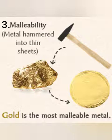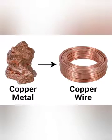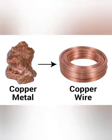Next point is ductility. Metals also have the property that they can be drawn — stretched — into thin wires. This is called ductility. Due to being ductile in nature, metals like copper and aluminium are used in making electric wires.